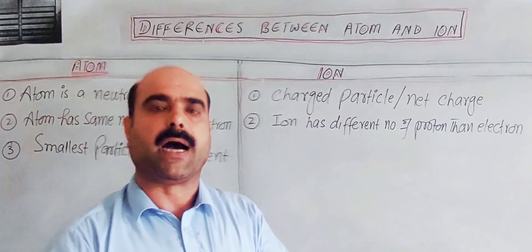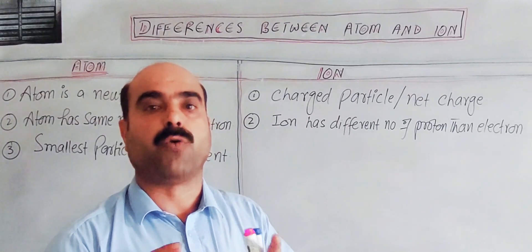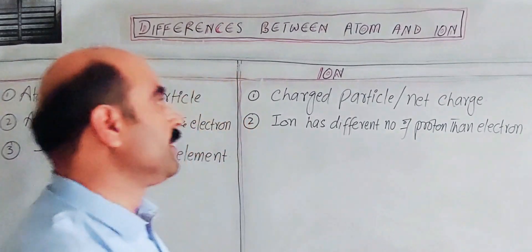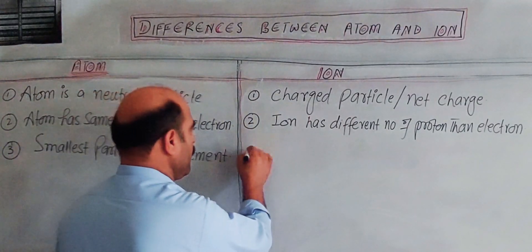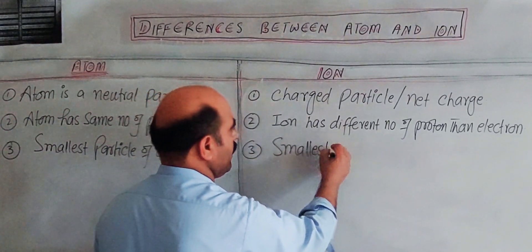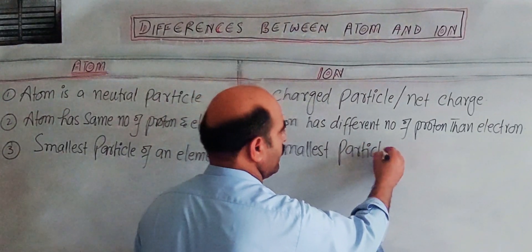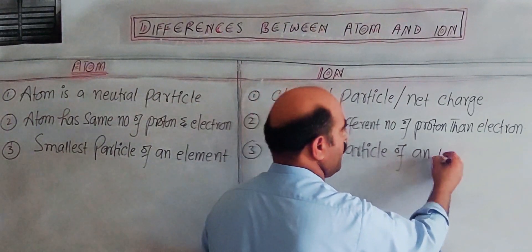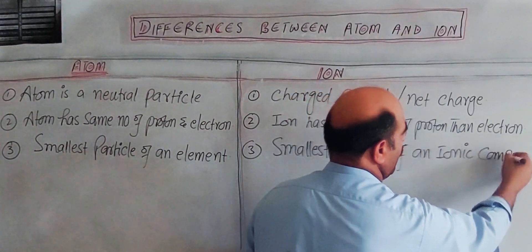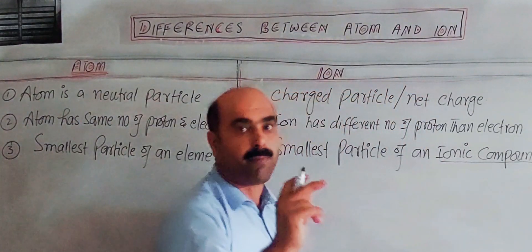An ion, by contrast, is associated with ionic bonds and ionic compounds. An ion is the smallest particle of an ionic compound. Most ionic compounds are held together by ionic bonds.